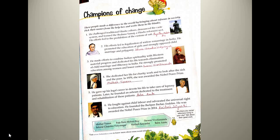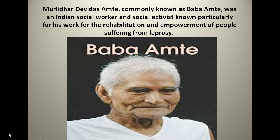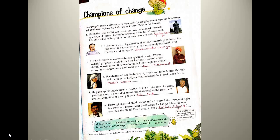The next champion gave up his legal career to devote his life to taking care of leprosy patients. Later he founded an ashram dedicated to the treatment and rehabilitation of these patients. Leprosy is a skin disease and people used to run away from those who had it, but he took care of such patients and founded an ashram where they could be treated. His name is Baba Amte, originally Murali Dhar Devidas Amte — known for rehabilitation and empowerment of people suffering from leprosy.